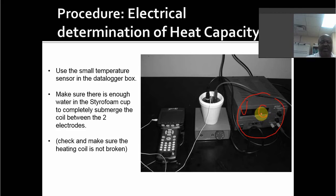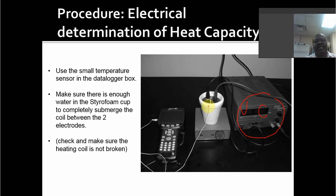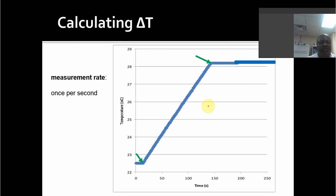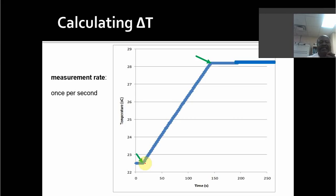We put a temperature sensor hooked to a data logger, which measures temperature versus time. This gives us delta T from the temperature change and the time duration of the heating. Here's a heating curve I obtained a few years ago: with about 40 grams of water and a stir bar for mixing, I turn on the data logger while the power supply is off — this gives a baseline. Then I turn on the power supply and the temperature starts to rise.